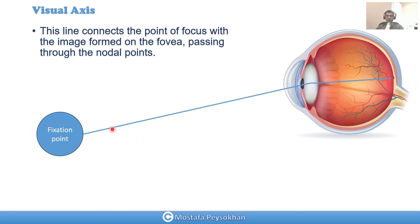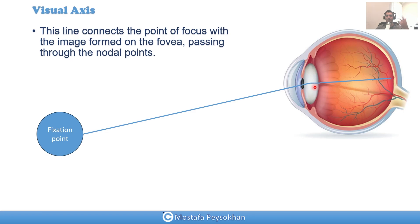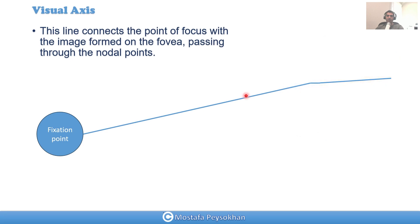In another video, I explained the nodal points. The nodal points are the points in a lens system where, when a beam passes through, the angle of the beam remains the same on exit. That's why they are called nodal — it's like a neutral point that doesn't change anything. As you can see, the visual axis passes through these two nodal points and then goes to the fovea.